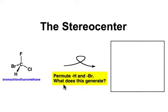By permuting, or in other words, exchanging two of the groups on a stereocenter will generate a stereoisomer, and that's in fact the definition. So let's exchange the bromine and the hydrogen on the stereocenter and bromochlorofluoromethane.